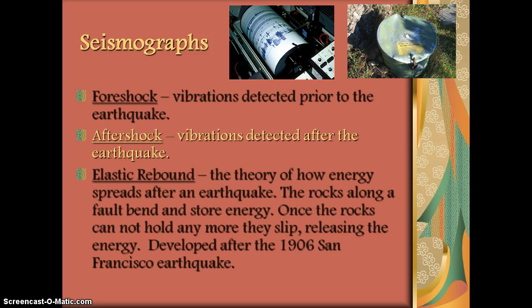The elastic rebound theory explains why energy passes through the rocks. It would be the same as if I were to line everyone up in class and push the first person. That first person, I would impart energy, would pass it on to the rest of the class and you would all fall down. Same principle in the crust. When energy is imparted on a rock or a rock bed, it will transfer it to the next rock and rock bed nearby. This was first developed in 1906 after the devastating San Francisco quake.